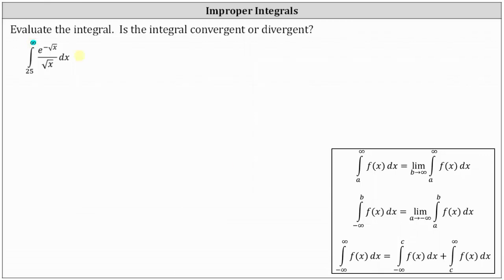The given improper integral is equal to the limit as b approaches infinity of the integral from 25 to b of e raised to the power of negative square root of x, which we write as negative x to the power of one half, divided by x to the power of one half, dx. We replace the upper limit of integration with b and take the limit as b approaches infinity.